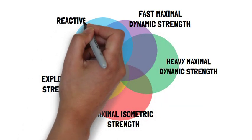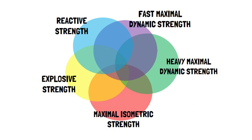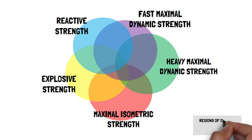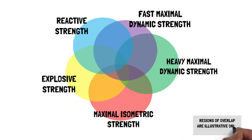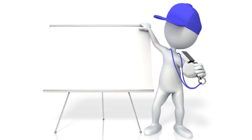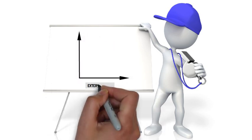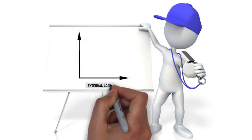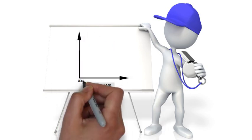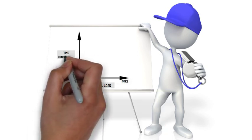This Venn diagram shows that even though each strength quality has a degree of overlap with the others, they are distinct enough to be considered unique. This is because each strength quality contains a different combination of external load and time constraint characteristics.